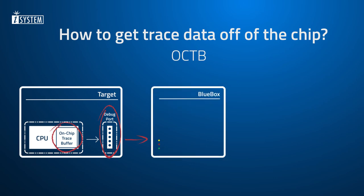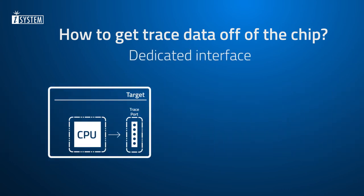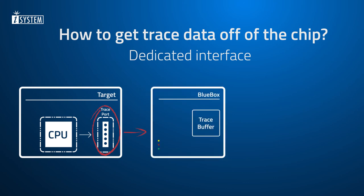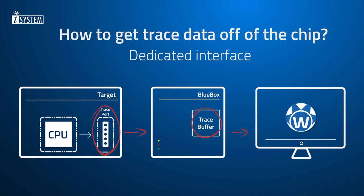Then the data continues its way into the PC and WinIDEA. In the second case, the data is transmitted off-chip through a dedicated trace port — either a serial or parallel interface. Here, the trace logic directly streams the data to the CPU trace port. The blue box captures these messages and buffers them in its own large internal buffer, after which they continue their way to the host PC.